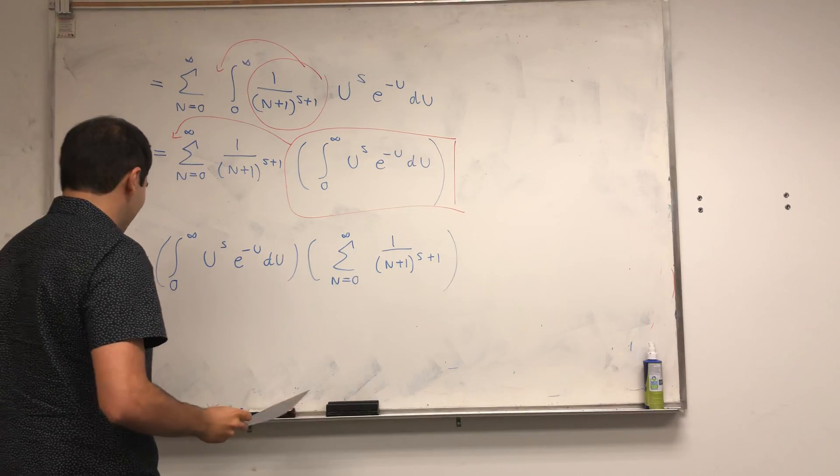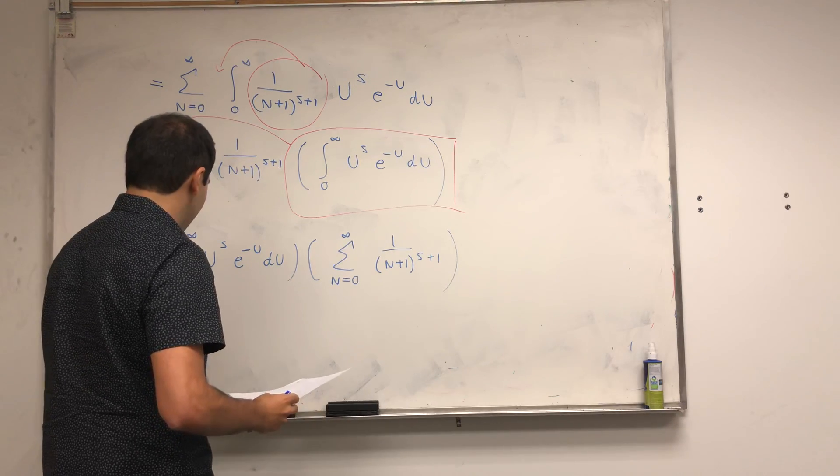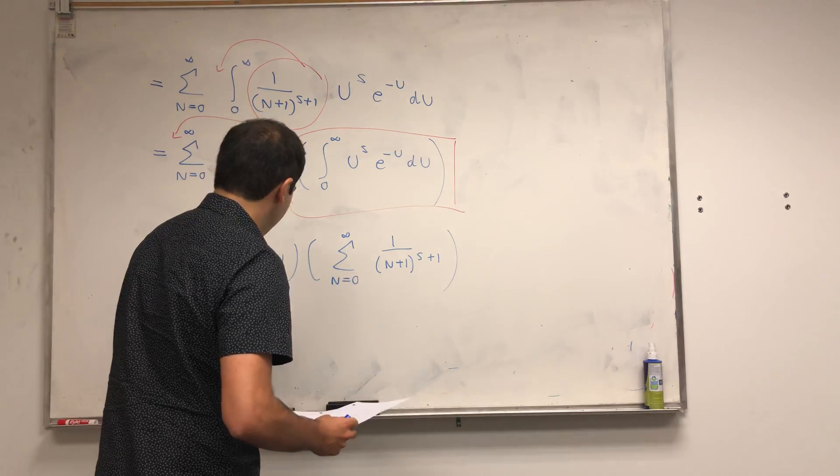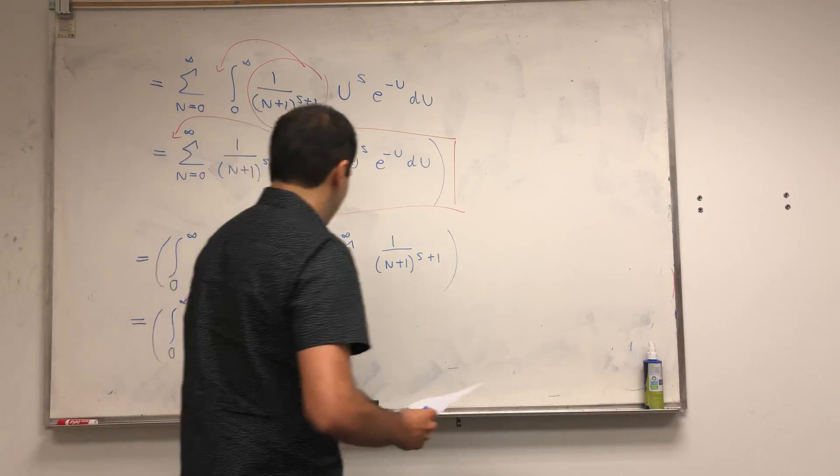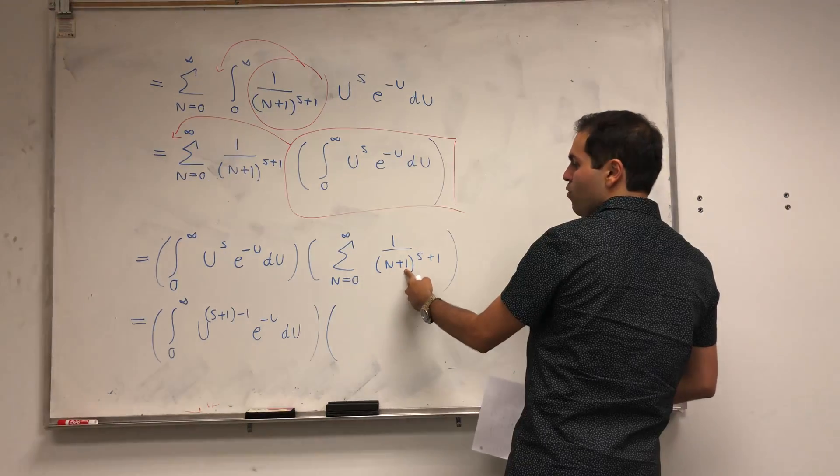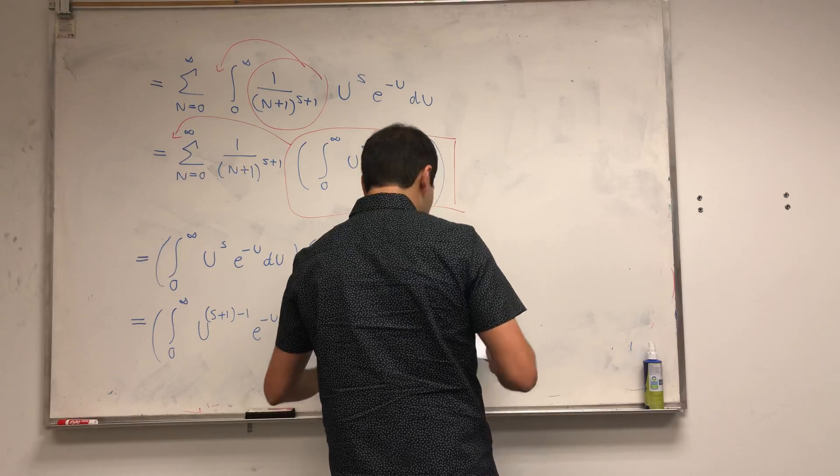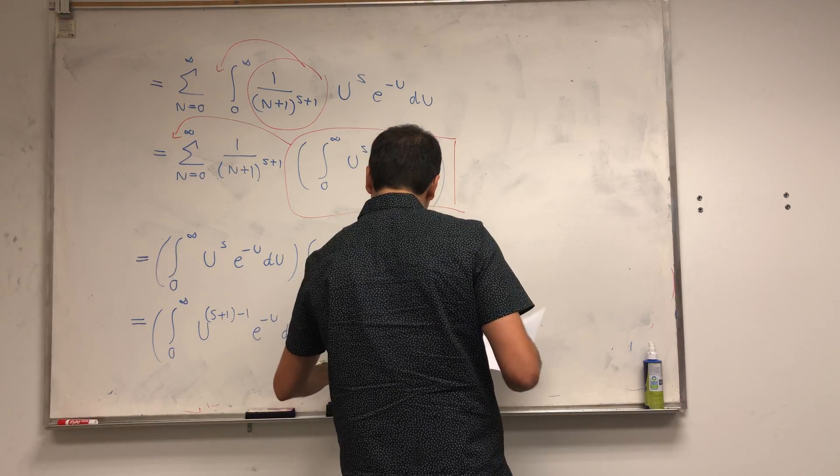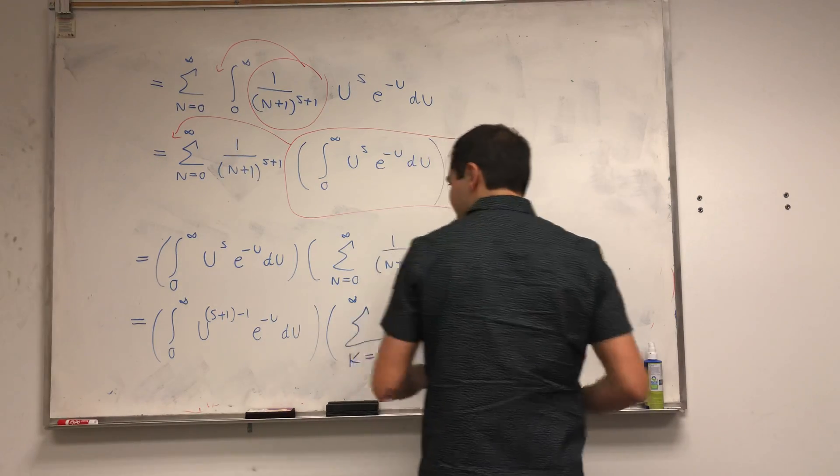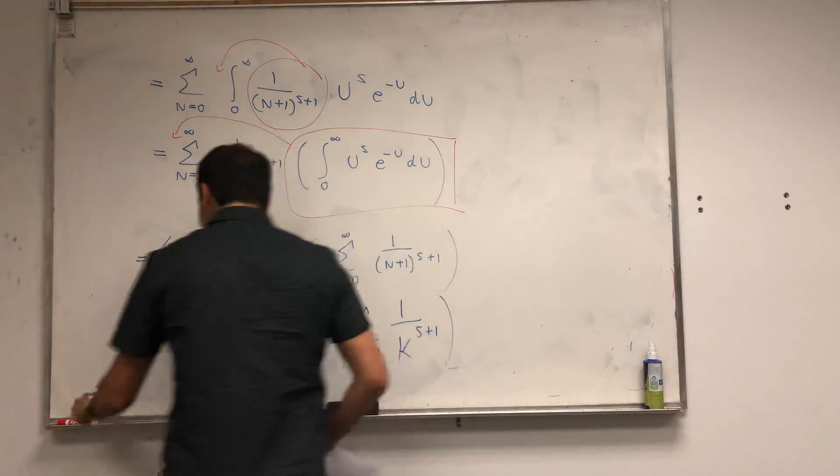Almost there. We want to write this in terms of functions that we know. Notice, this is the same thing as integral from 0 to infinity of u to the s plus 1 minus 1, e to the minus u du. And this, strictly speaking, it starts at 0, but then we have 1 to the s plus 1, 2 to the s plus 1, et cetera. So it's the same thing as saying sum from k from 1 to infinity of 1 over k to the s plus 1.